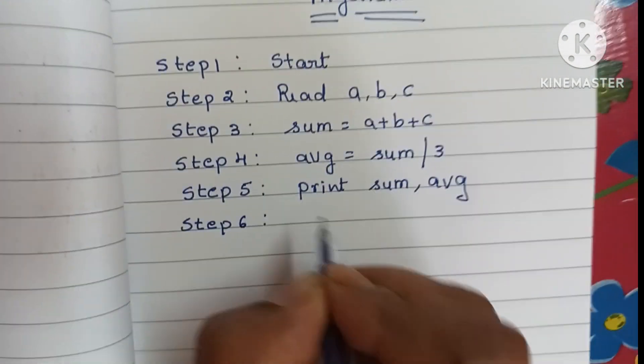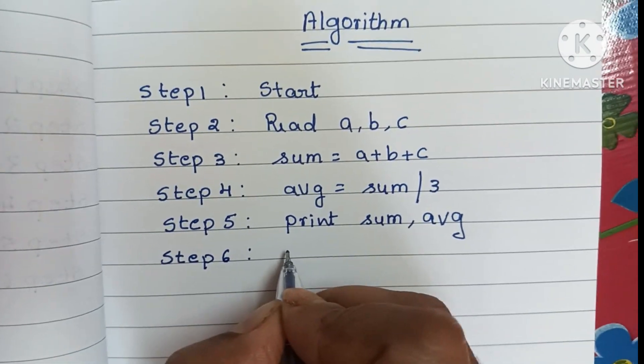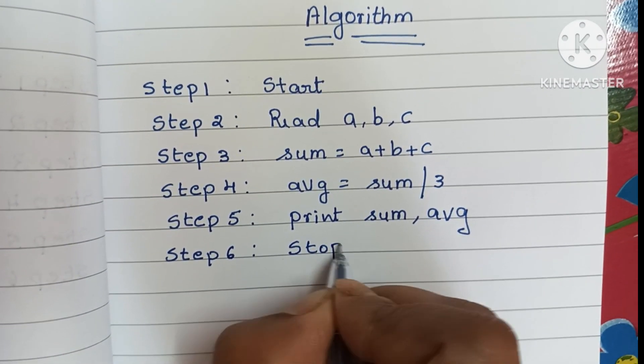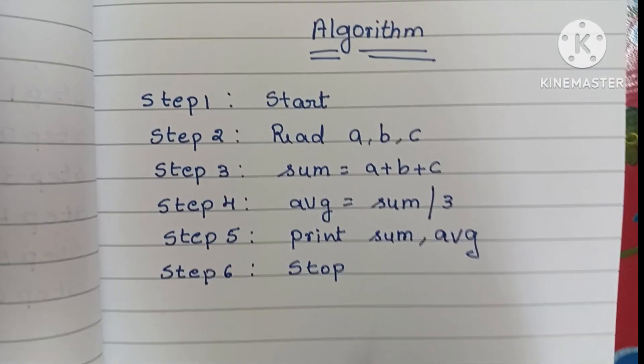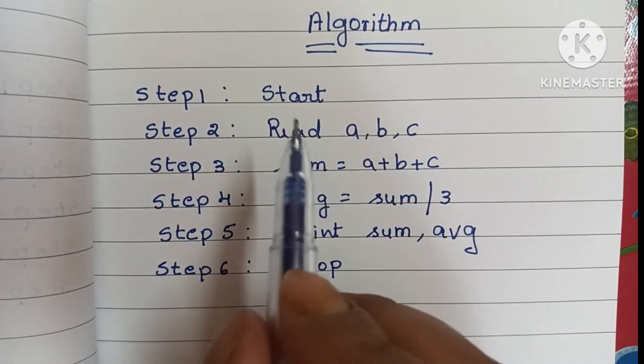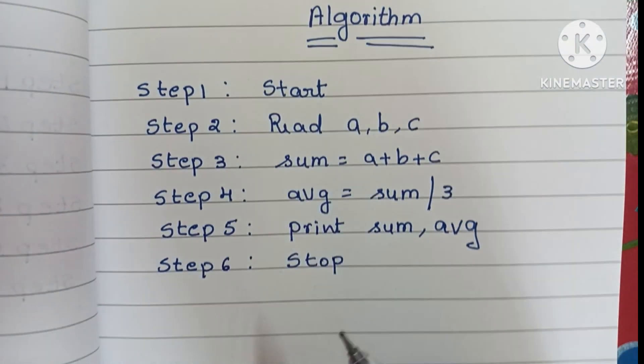The last step is to stop the algorithm using a stop statement. An algorithm always starts with a start statement and ends with a stop statement.